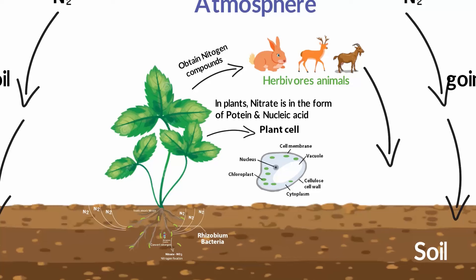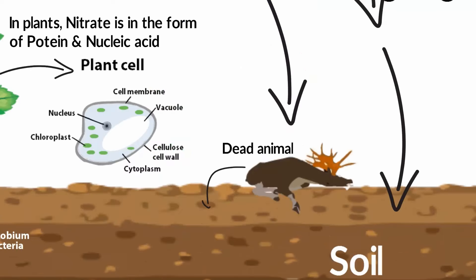When animals produce waste or die, bacteria consumes this dead organic matter. As a result, the nitrogen in this waste is in the form of ammonium. This process is called decomposition or ammonification.